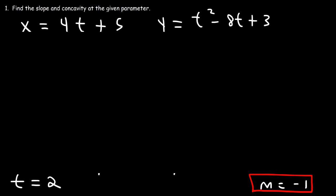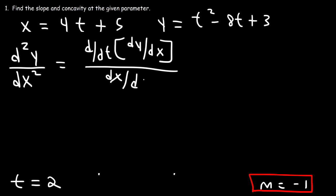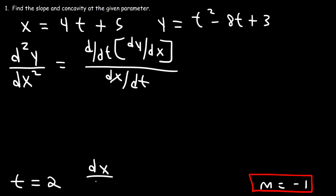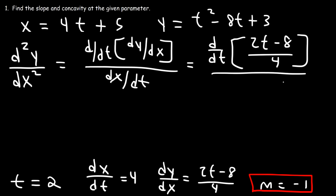Now let's find the second derivative in order to determine the concavity at the given parameter. So we need to find a formula for d squared y over dx squared. This is equal to the derivative of dy/dx with respect to t divided by dx/dt. We know that dx/dt was 4, and dy/dx we found to be 2t minus 8 over 4. So we need to find the derivative of this expression and then divide it by dx/dt, which is 4.